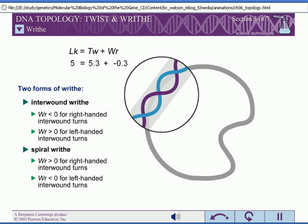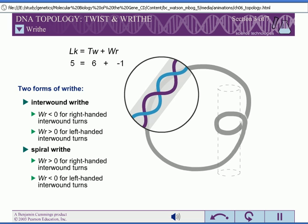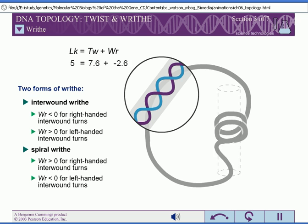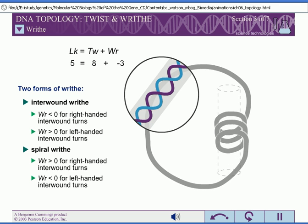If right-handed DNA writhes to form a left-handed spiral coil, the DNA must twist to accommodate the writhe. Therefore, left-handed spiral turns are assigned negative writhing numbers. Again, this is the opposite of left-handed interwound turns.